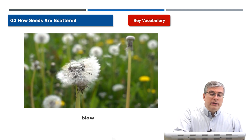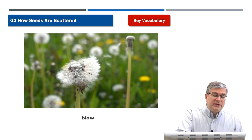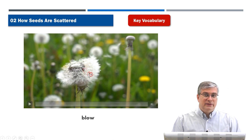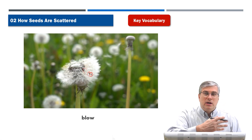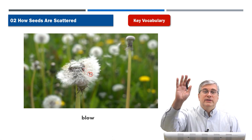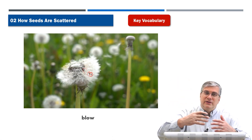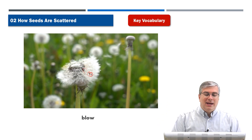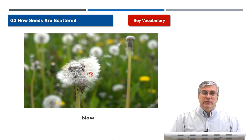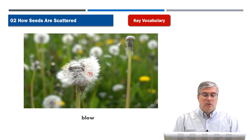Now what happened? You see these little pieces — those are seeds. The wind comes along and blows the dandelion seeds and they are scattered. And that's how the plant reproduces itself, because new plants will grow.